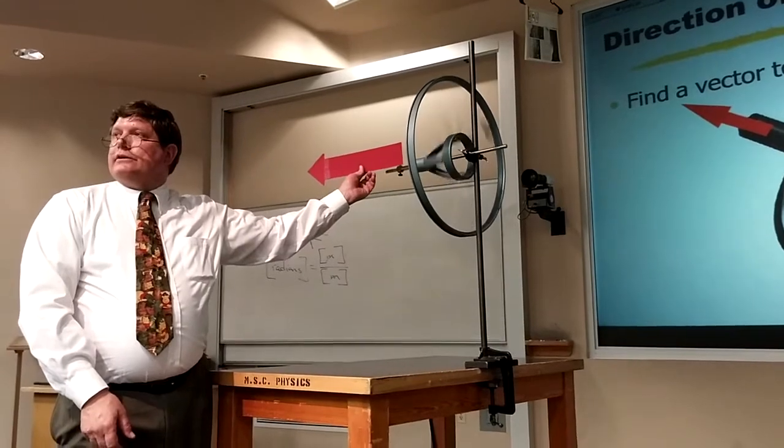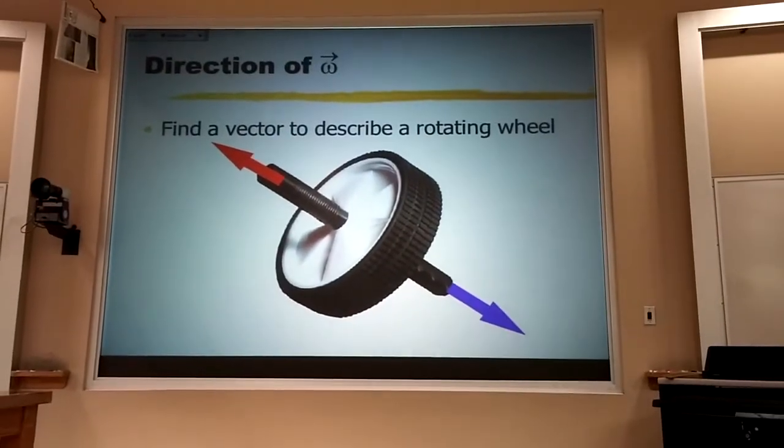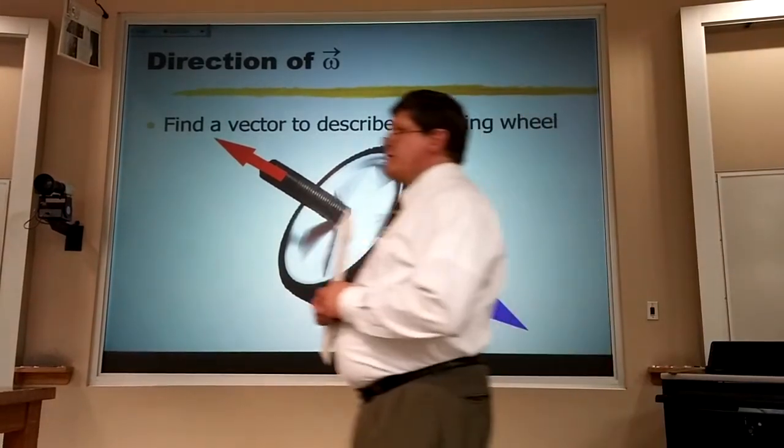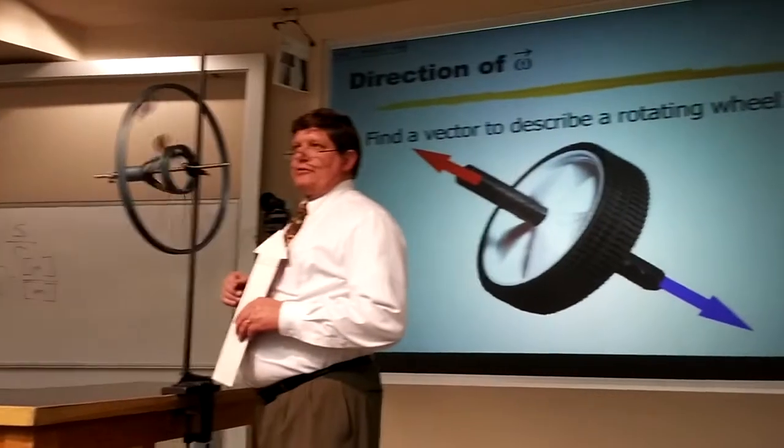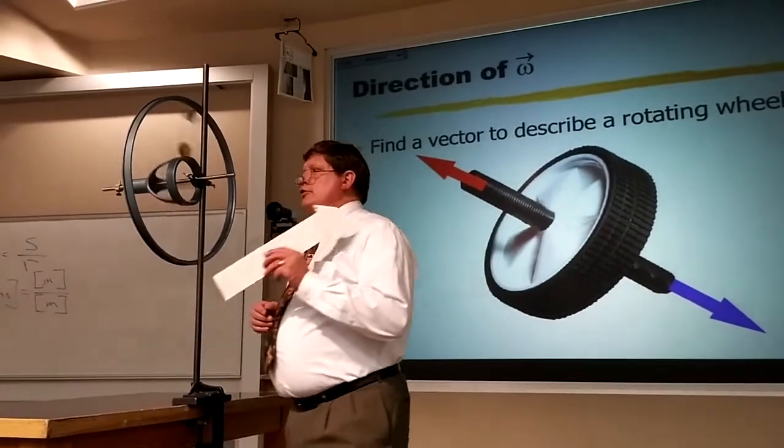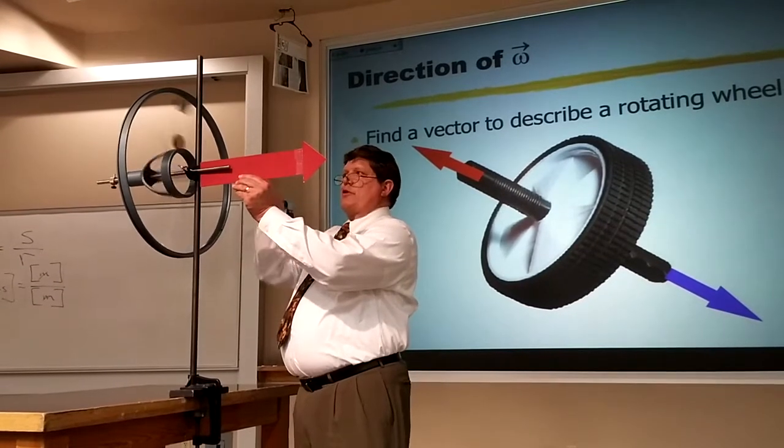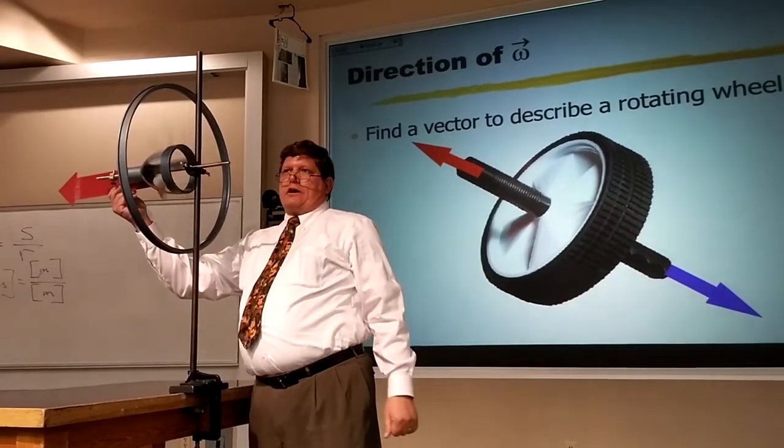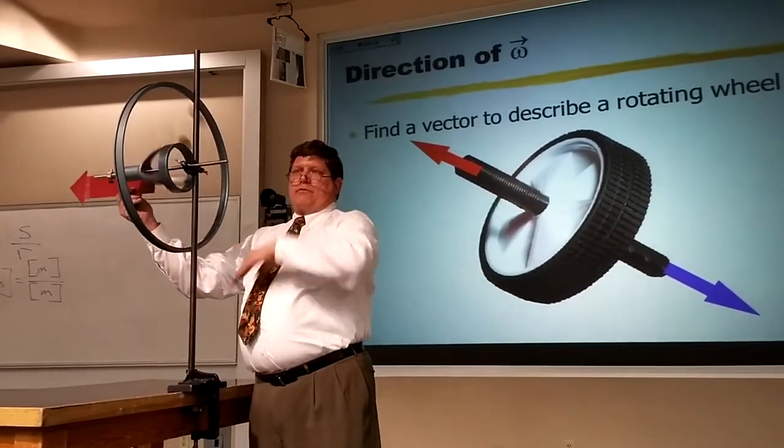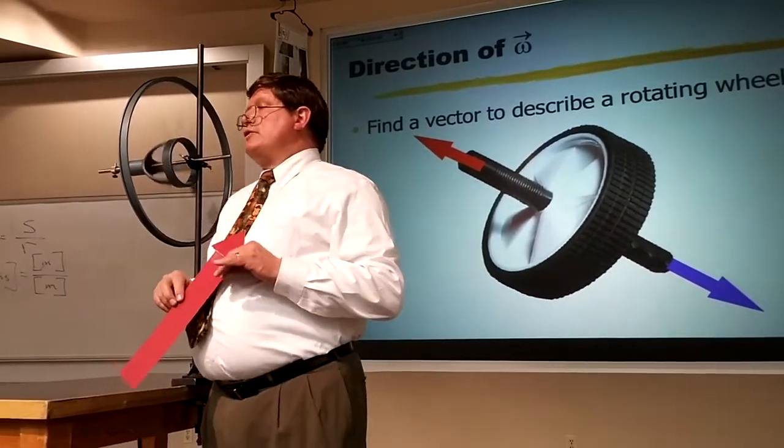Now, here's a little bit of a wrinkle. It turns out that there's two ways to point along an axis, which is convenient because there's also two ways to rotate about any given axis. And so what I'm going to do is I'm going to associate one direction along the axis with this rotation, and I'm going to associate the other direction along the axis with the other rotation. The question is how to decide which one goes with which.